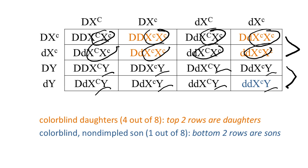If we asked you, what is the chance that they could have a colorblind daughter, we would look at the top two rows only and you'll see that there are four out of eight. These are shown for you in an orange color.